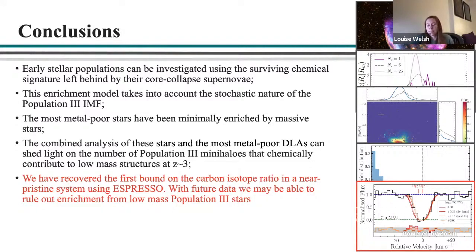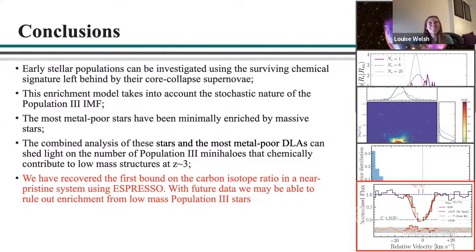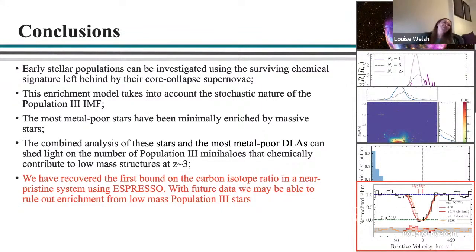One more question: could you redo this using Population II instead of Population III yields? That's a good question. For elements like carbon and oxygen, you get very similar yields for Population III and Population II stars, so it would be unlikely to make a difference in that case, but for these particular elements I haven't checked, so I don't know if that's the same.